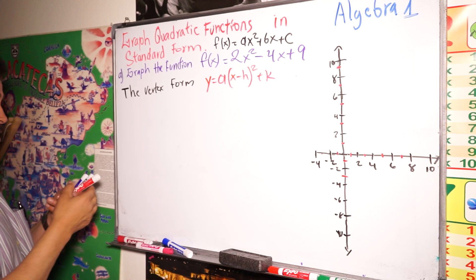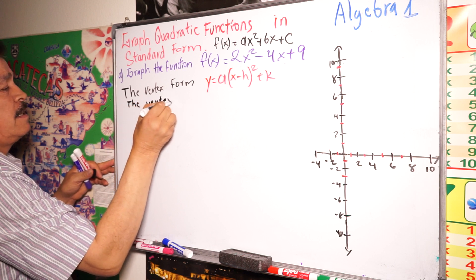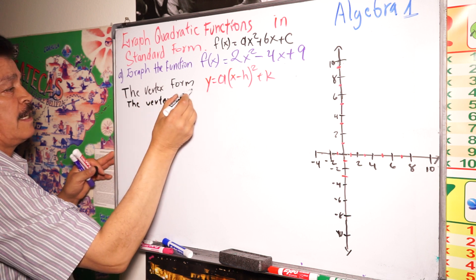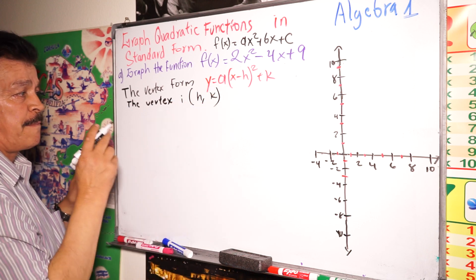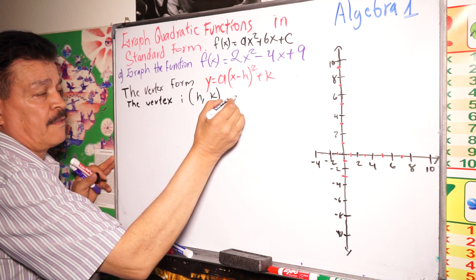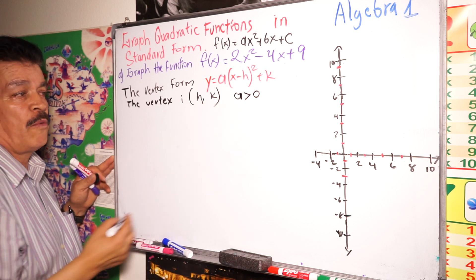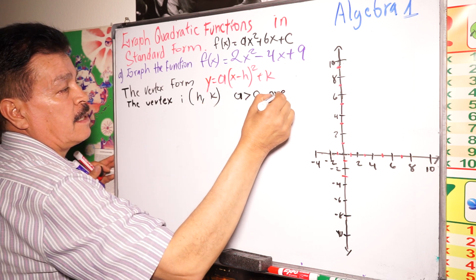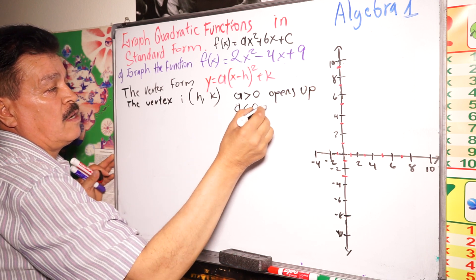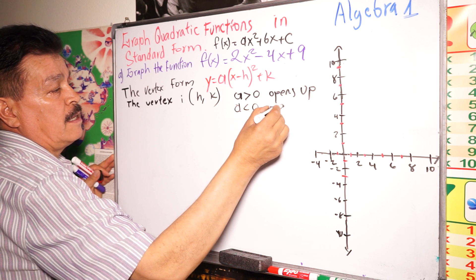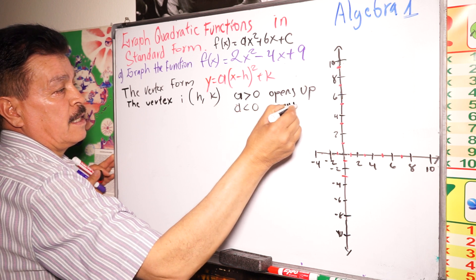The vertex is the point (h, k). If a is greater than zero, the parabola opens up. If a is less than zero, the parabola opens down.